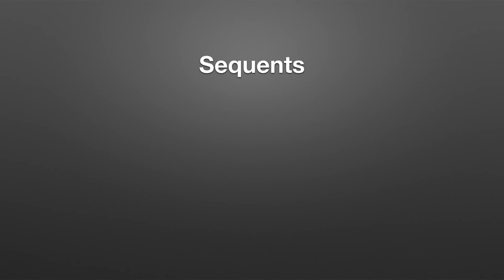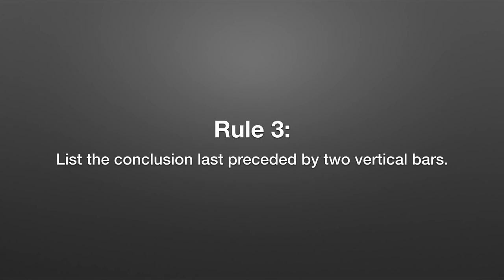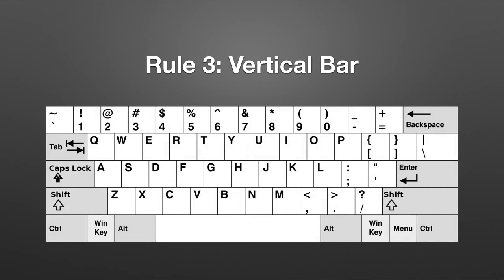This brings us to sequents. A sequent uses a single string of symbols to represent an entire argument. Rule three: list the conclusion last in the sequence. To indicate the conclusion, we use two vertical bars, with a space after the vertical bars, then the conclusion. On a standard QWERTY keyboard, the vertical bars are produced by pressing shift and the backslash key.